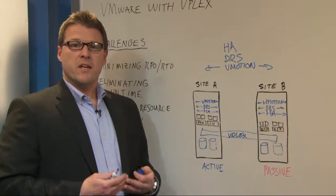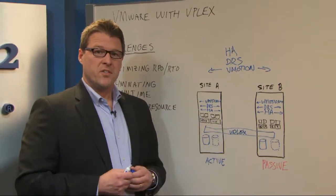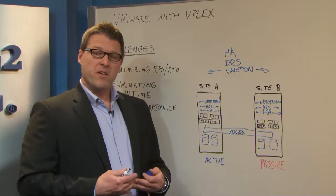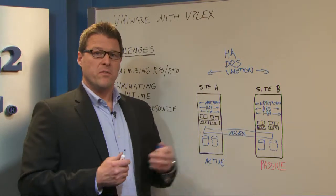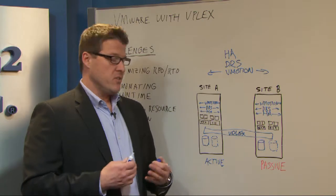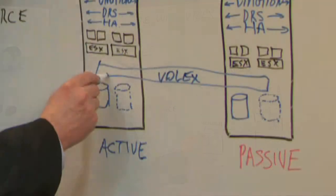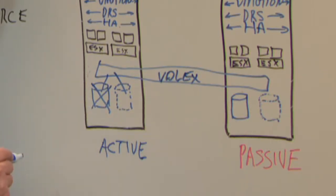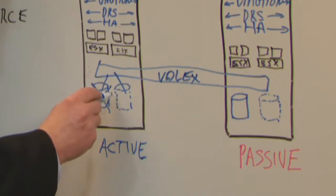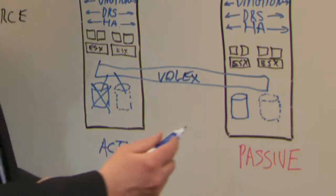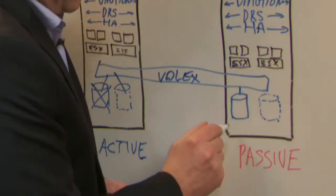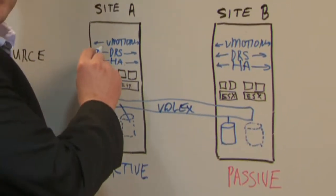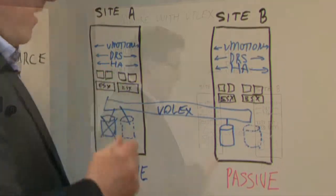VPLEX provides a single view of storage to the ESX servers. They're all able to see the same disk, access the same VMFS data store, and move VMs between sites non-disruptively. In addition, VPLEX is able to do mirroring within a site, so if I have a failure at this site I can still run off another mirrored leg here, or at Site B I can access storage here. So regardless of where I have a storage failure, my application can continue to run at Site A.